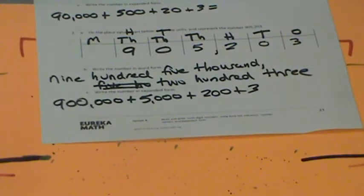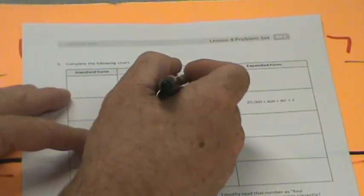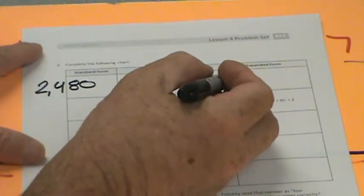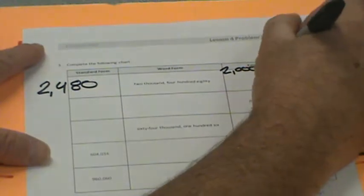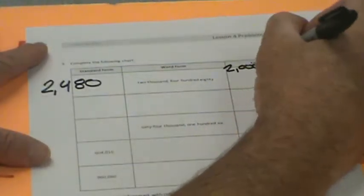The back side of our problem set. We got this number here: 2,480. They want us to write it in standard form, so 2,480. Then they want us to write in expanded form: 2,000 plus 400 plus 80 equals that.